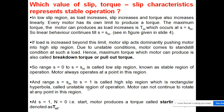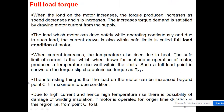At s = 1, the rotor speed N = 0 — this is the starting condition. The torque produced at this point is called the starting torque, represented as point B on the curve. When the motor runs and load increases, the torque produced increases as speed decreases and slip increases. The increased torque demand is satisfied by drawing more motor current from the supply.